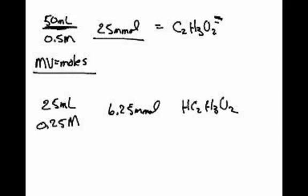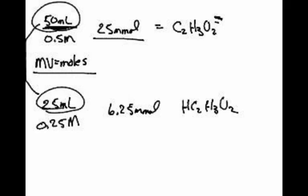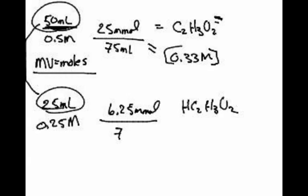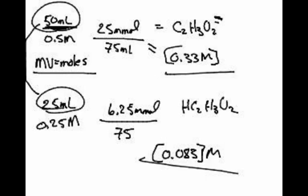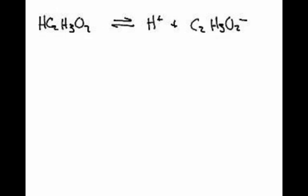Now, since we want to work in molarities, I have a total volume, when I pour these together, of 50 plus 25, or 75 milliliters. So the molarity of this would be 0.33 molar for the acetate, and this would be 6.25 divided by 75, 0.083 molar. Now I can go back to my equilibrium problem.